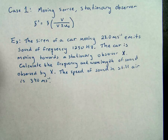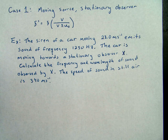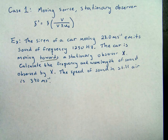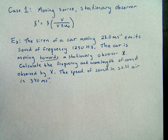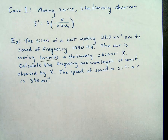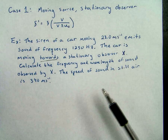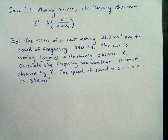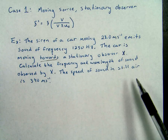So in this case we have a siren of a car that moves 28 meters per second, emitting a sound of frequency 1250 hertz. The car is moving towards a stationary observer X, and that's going to be our key here as to whether we use the plus or the minus. We're going to calculate the frequency and wavelength of sound observed by observer X, and they give us the speed of sound in still air.